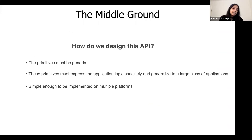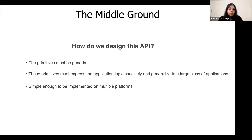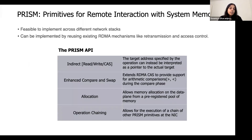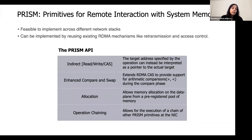How would one go about designing this extended API? These primitives must be generic, yet have the power to express application logic concisely. They must also generalize to a large class of target applications, and must be efficient enough and feasible to implement on different network stacks.